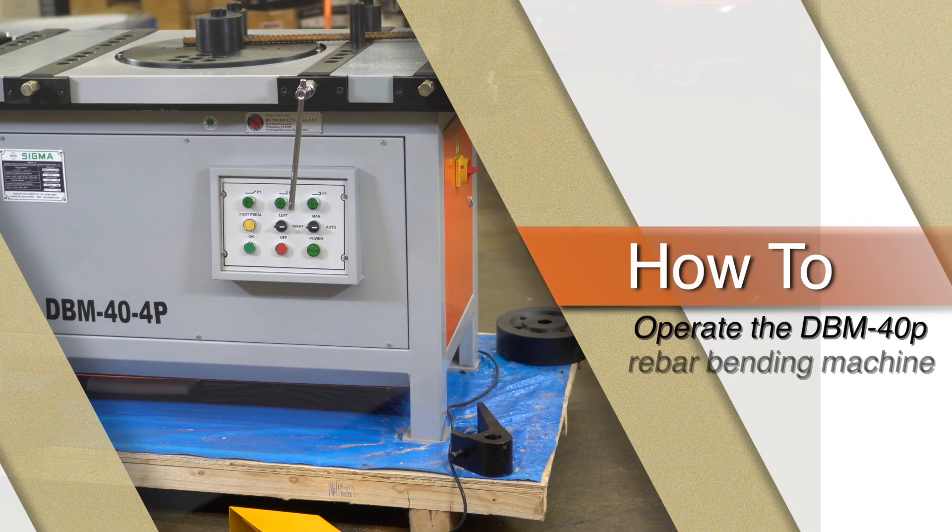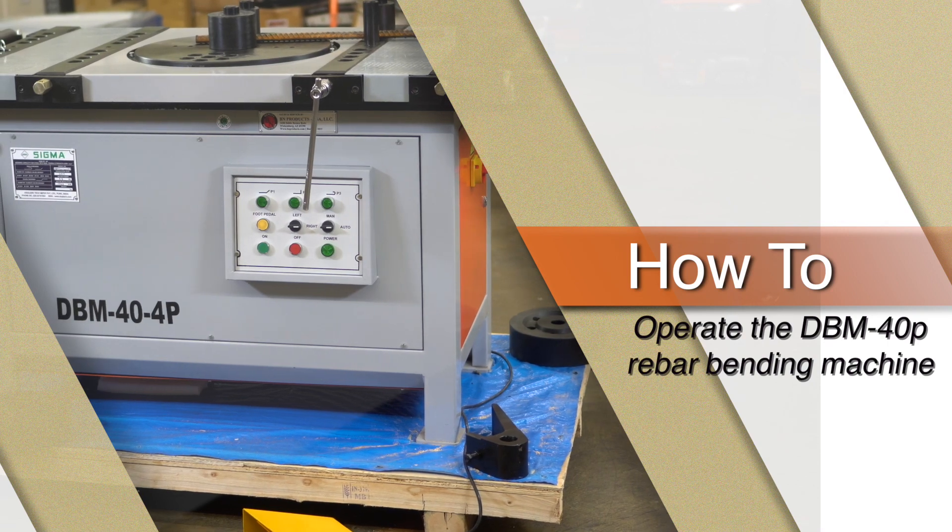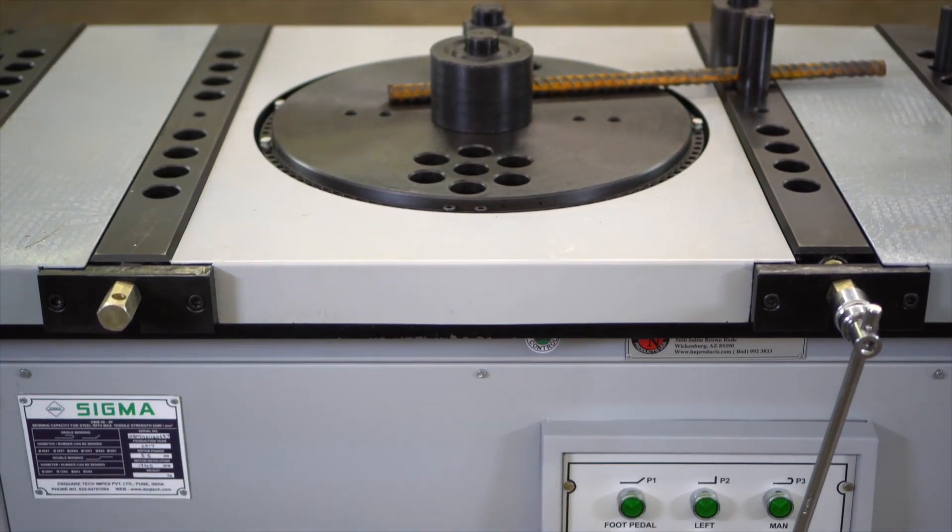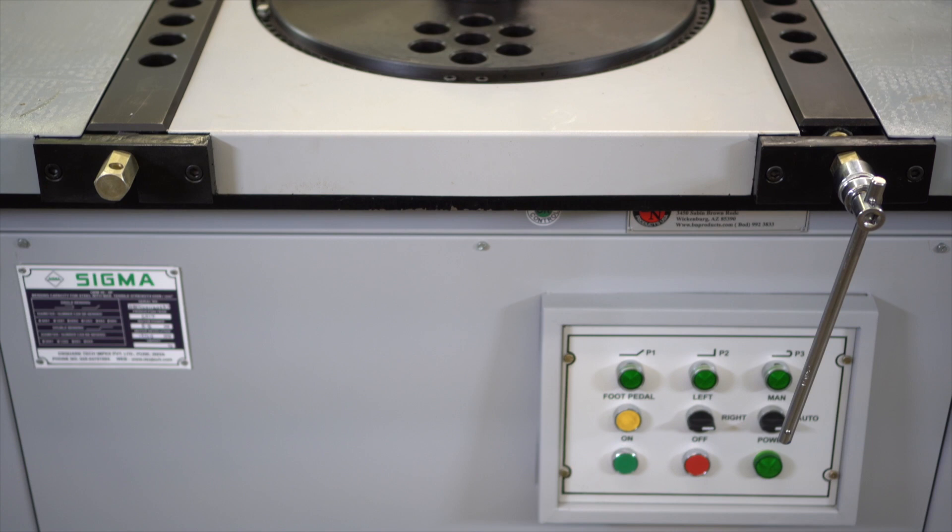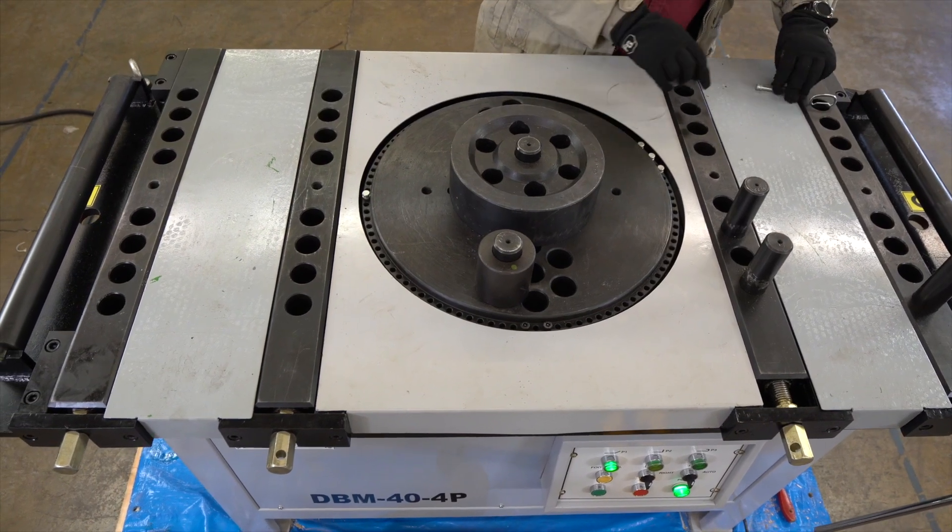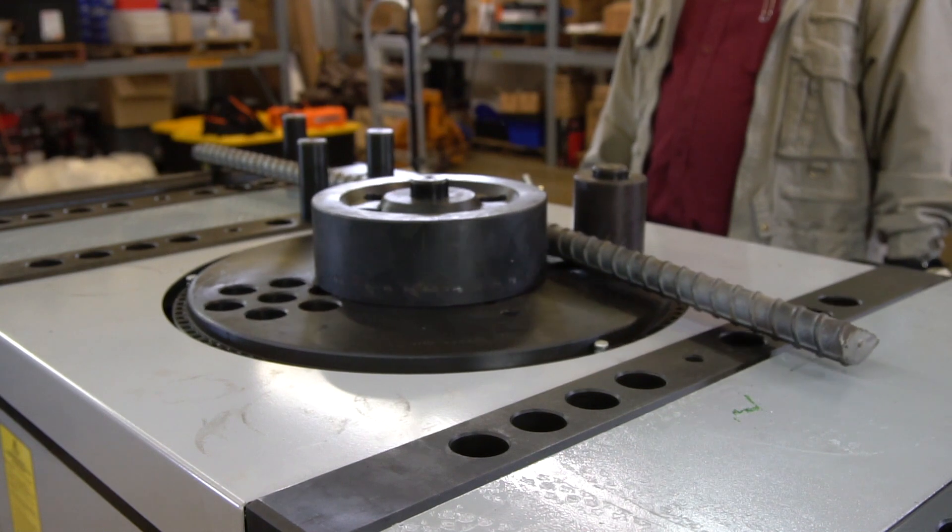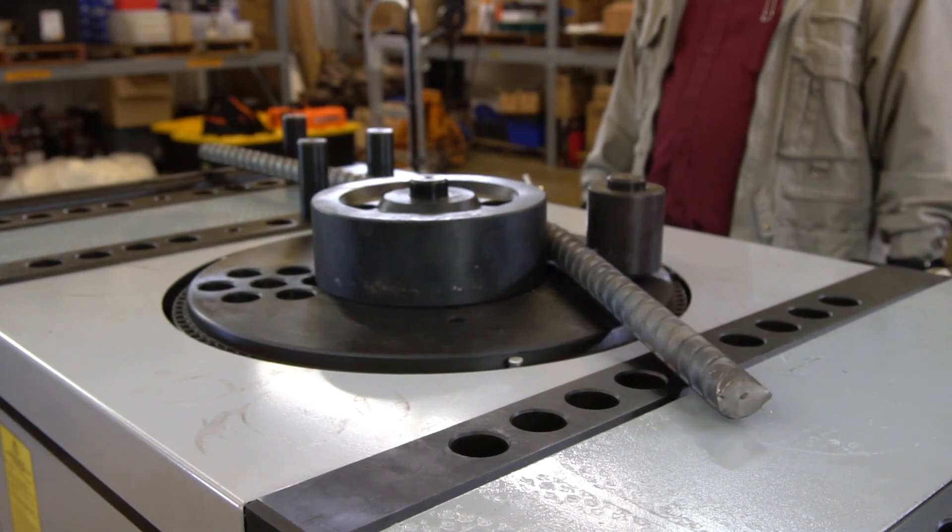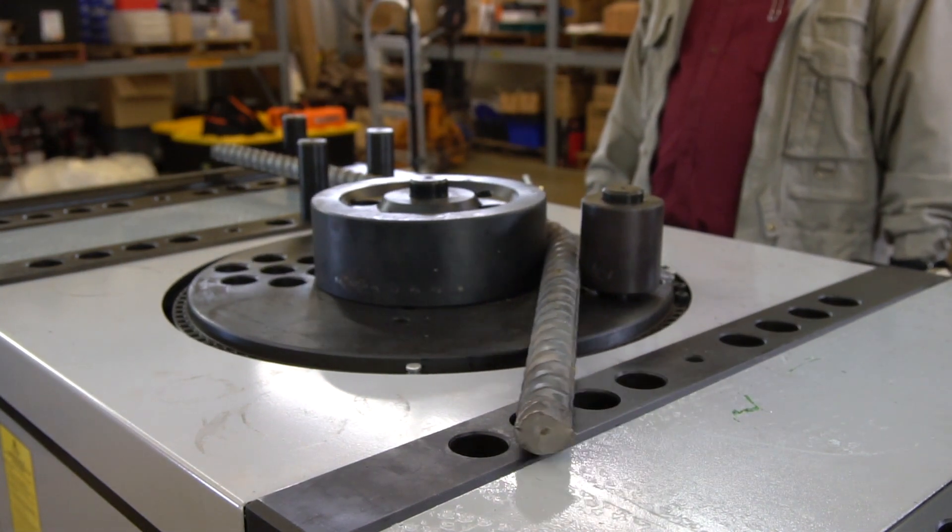This is how to operate the DBM 40P production rebar bending machine from the Sigma series by BN Products USA. This unit is used to accurately shape rebar. It's a production workhorse while being easy to use.